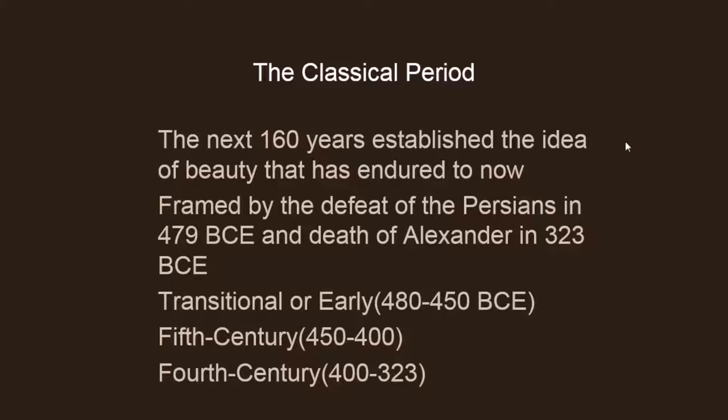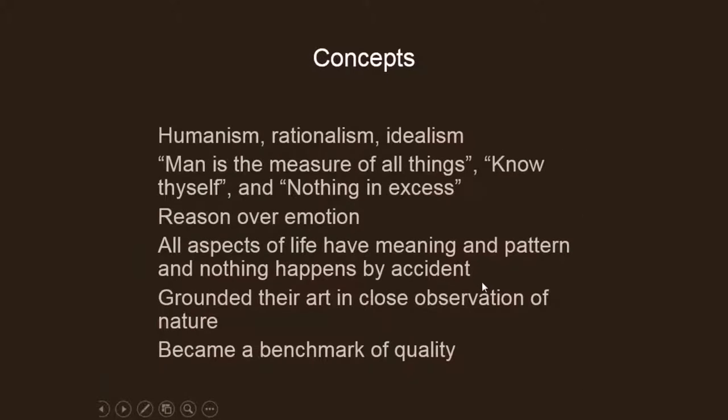There's a rapid series of events in Greek history during this period. Concepts that begin to arise include humanism, rationalism, and idealism. Statements like 'man is the measure of all things,' 'know thyself,' and 'nothing in excess.' The concept of reason over emotion — that all aspects of life have meaning and pattern and nothing happens by accident. They grounded their art in close observation of nature, and this observation becomes their benchmark for quality.